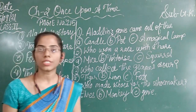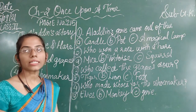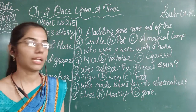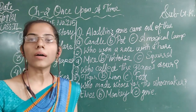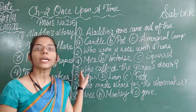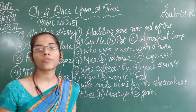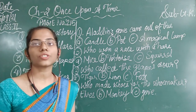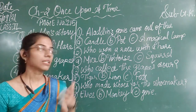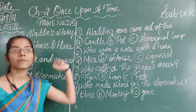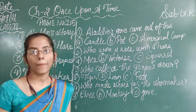One day, a merchant came to his house to take Aladdin to a place. He requested Aladdin's mother that he would take Aladdin with him and help them out. But that merchant was actually a cruel magician. He had followed some magical tricks in front of Aladdin to convince him that he was a good man.